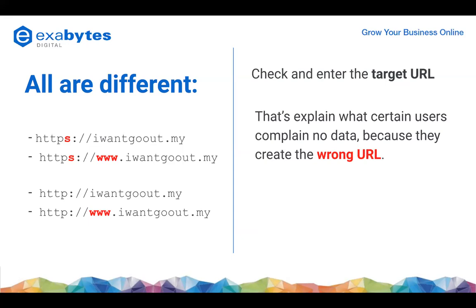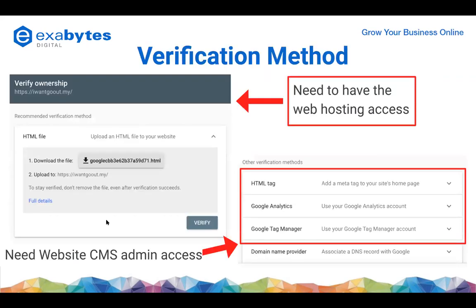This is why certain users complain they already created their Google Search Console property but after a few months the data graph is still very low - because they created the wrong URL. You can just type their primary domain in Google and see which version Google shows - let's say it shows the www version with HTTPS. But they created it without www, so it will show some data but very little. The URL targeting - HTTPS or HTTP - also affects the data, because Google treats every URL as a different website.